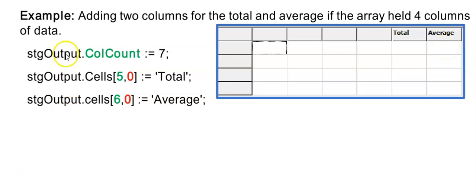In the first line I'm setting the column counter to 7, and then I'm displaying in column 5 but row 0 the label 'Total'. And then in the sixth column, still in row 0, I'm displaying the label 'Average'.